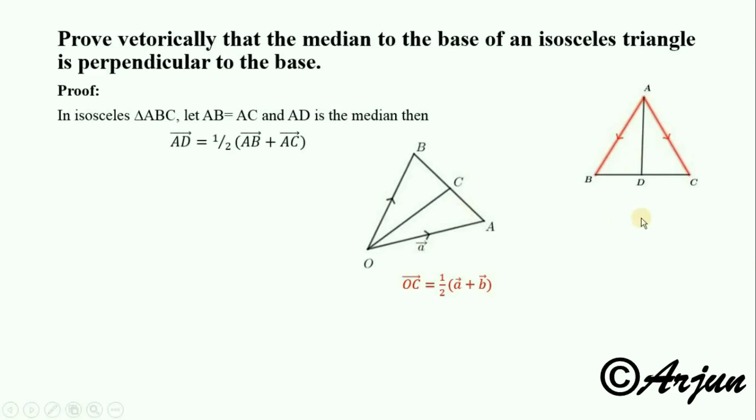This is the midpoint of BC. Therefore, AD equals one-half AB plus AC.